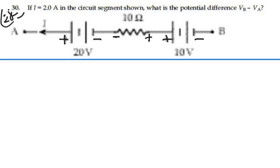Walking our way from B to A, VB minus VA would then be equal to negative 10 volts plus 10 times I minus 20 volts.